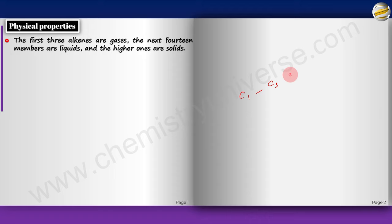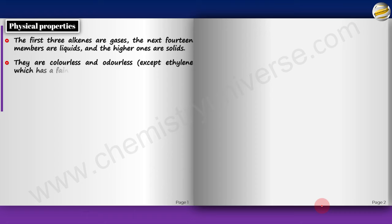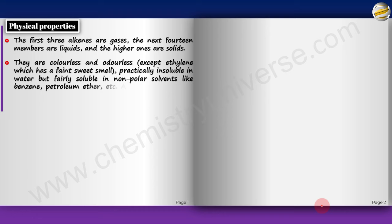C1 to C3 are gases, C4 to C17 are liquids, and anything greater than C18 is solid. But remember, as you make more and more branching, it is possible that some C4 may end up becoming gases because branching will decrease the Van der Waal forces. Alkenes are colourless and odourless except for ethylene which has a sweet smell. They are practically insoluble in water because they are non-polar, but fairly soluble in non-polar solvents like benzene, petroleum, and ether.